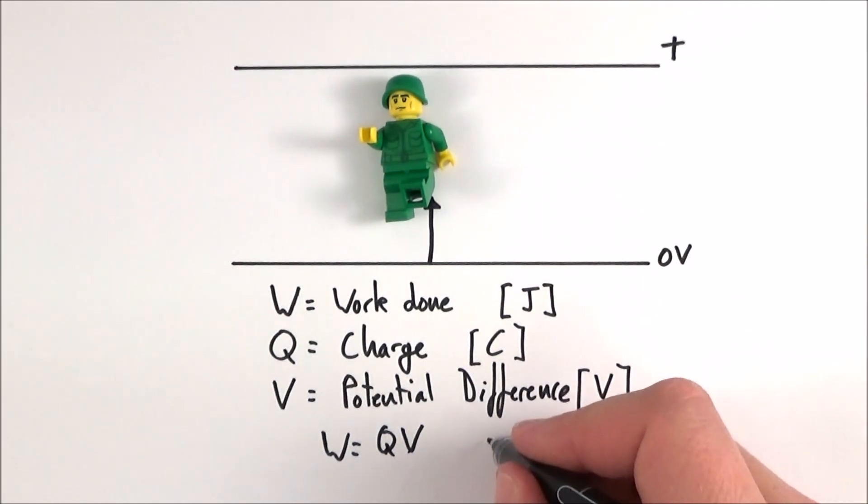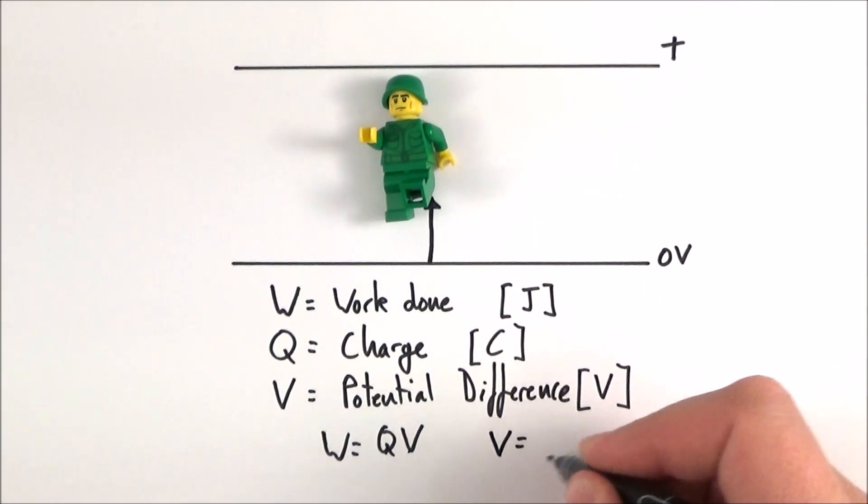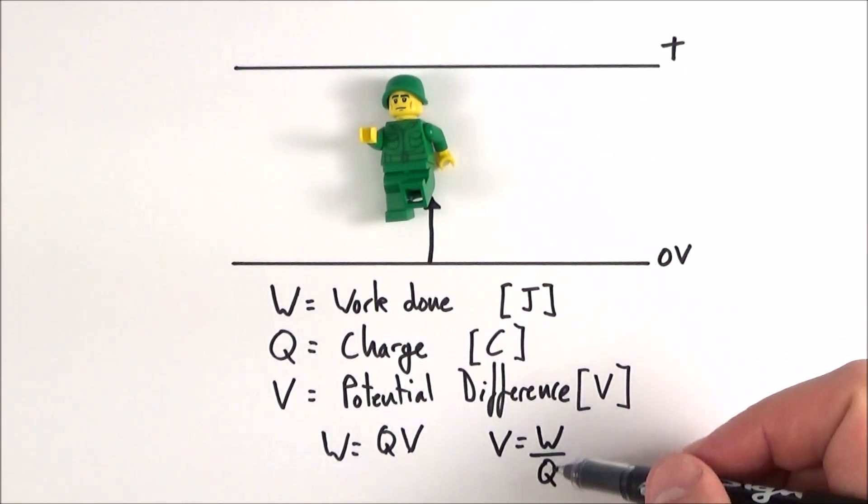Now we could also look at this in another way we could say that the potential difference is equal to the work or the energy per unit charge and this is following on from the last video that I did all about EMF versus potential difference.